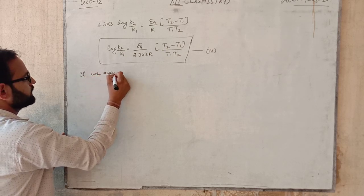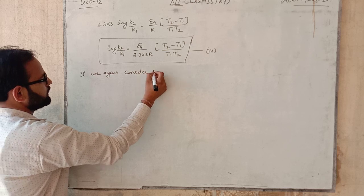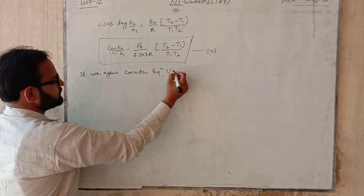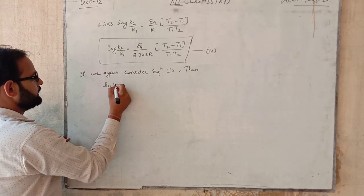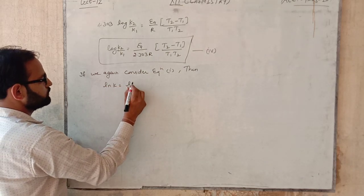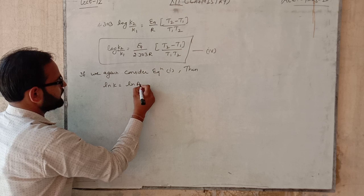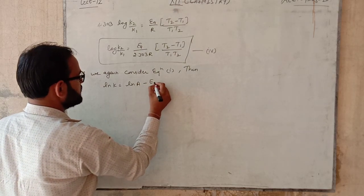Then ln k is equal to ln A minus E upon RT.